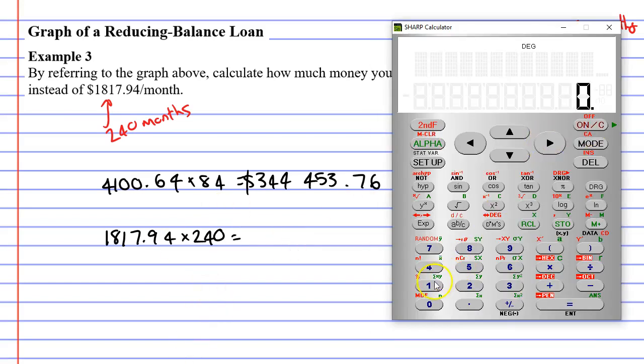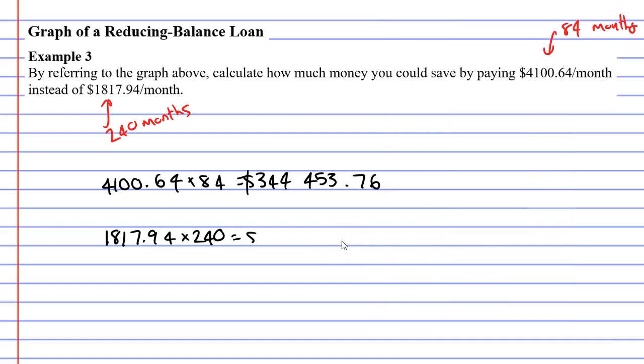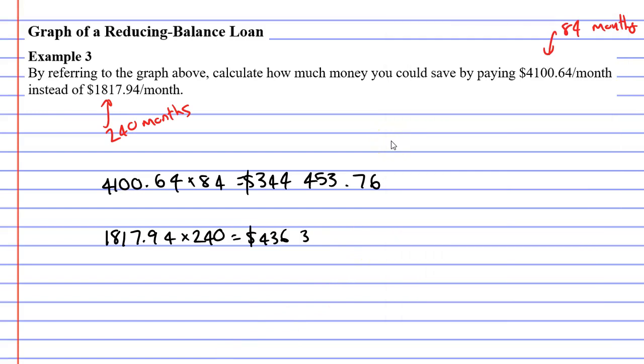Let's bring up our calculator. $1,817.94 times 240 equals. And that one's going to be quite a bit larger. This one is $436,305.60.